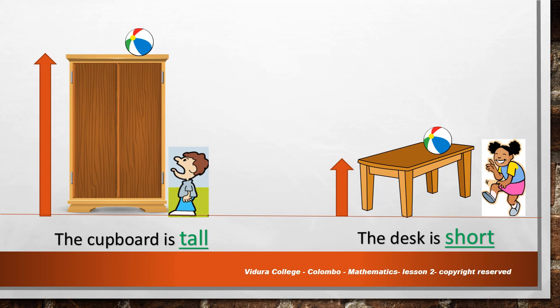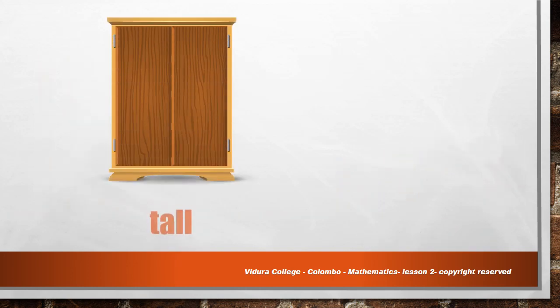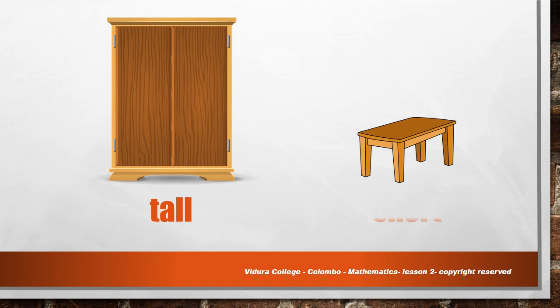Easily she got the ball because the desk is short. Now you know short is when something measures a small distance from end to end. Now let's see the height of these two objects. The cupboard is tall. The desk is short.